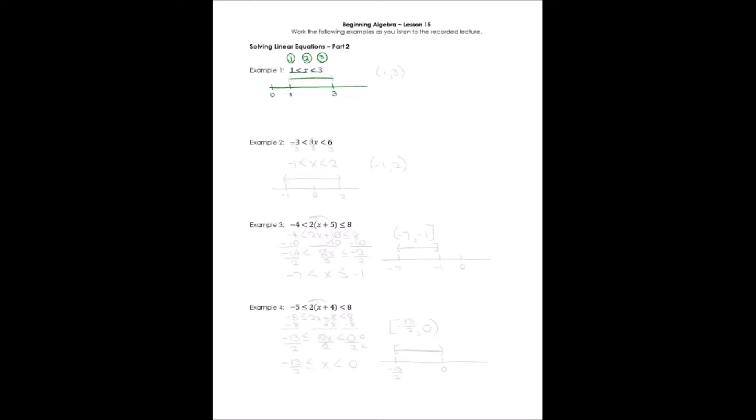Does it include one and three? Well, we don't have any equal signs under those inequalities, so no, it doesn't. We have to use the soft brackets or the parentheses. How do we write it in set notation? Well, the same way we drew it on the number line. The smallest number it can ever be is one. It does not include one. Comma. The largest it can ever be is three, and it does not include three, so we use parentheses on both sides.